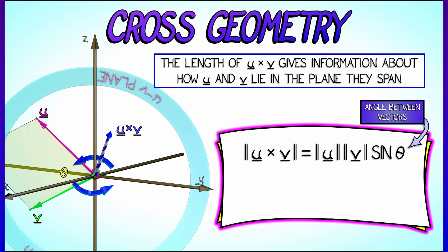This is similar to what we saw with the dot product formula. Remember that one? But this has a bit more geometric meaning. This length of u cross v, this length of u, length of v sine theta...